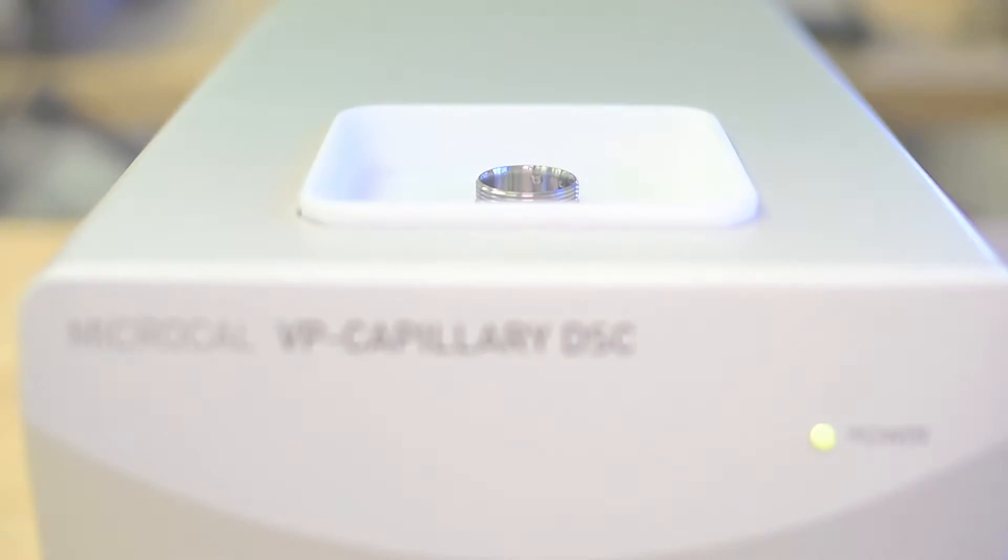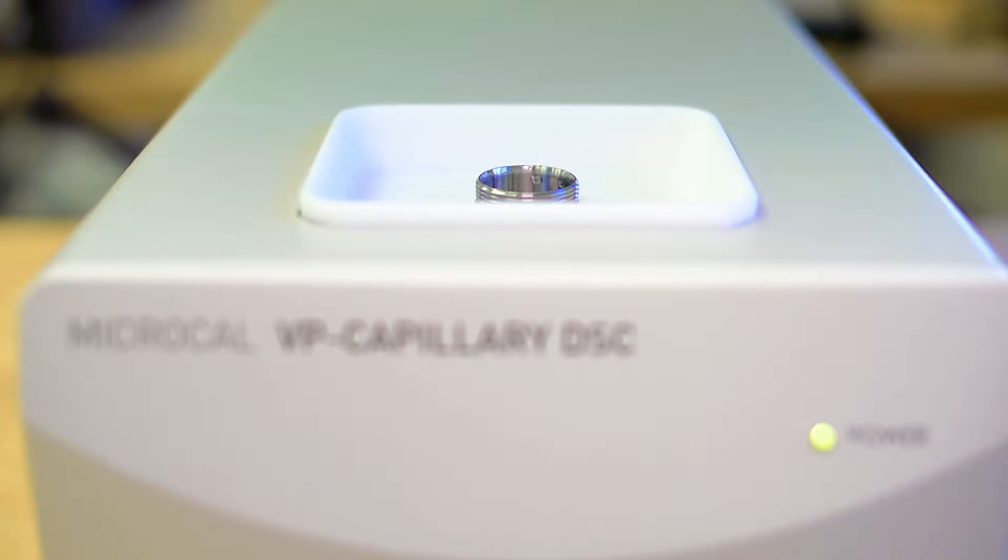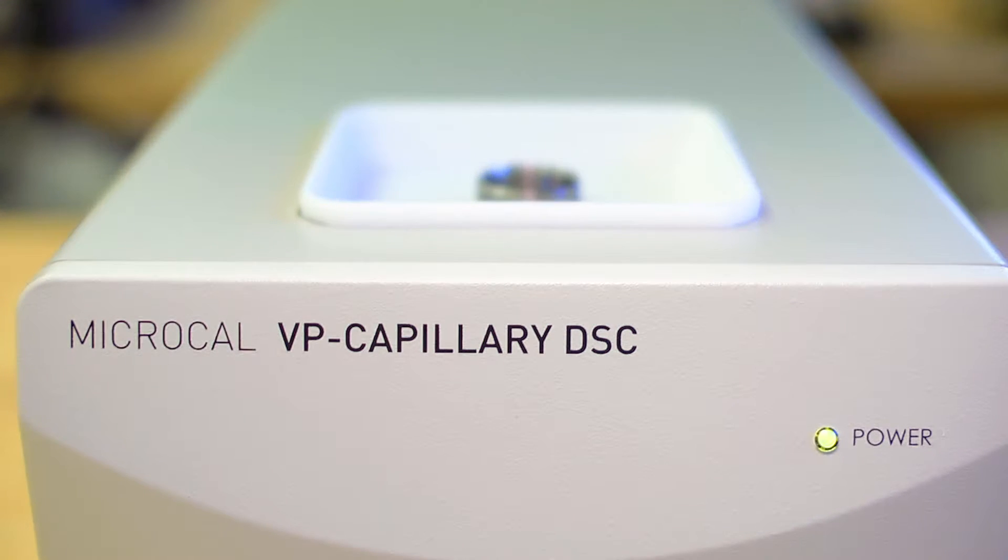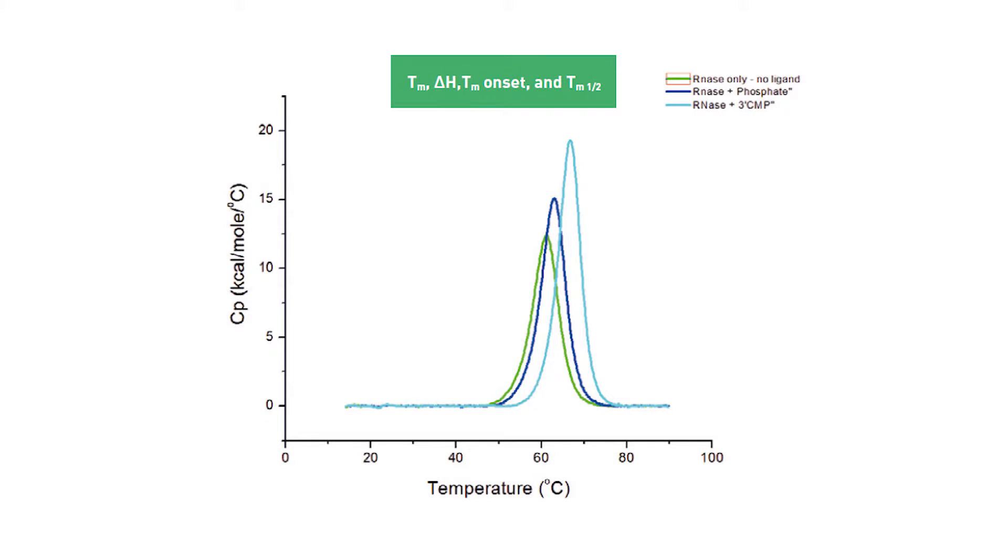Differential scanning calorimetry is a powerful analytical tool for characterizing the stability of proteins and other molecules. The MicroCal VP Capillary DSC provides fast, accurate transition midpoint TM determination and can generate a thermodynamic profile for samples to provide insight into the factors that affect conformation and stability.